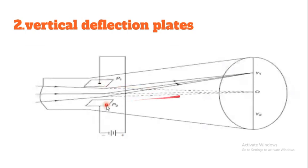This is connected to the P2 plate, so this is the zero position. This is the deflection. This is the vertical electron beam. This is the Y1 wipe.